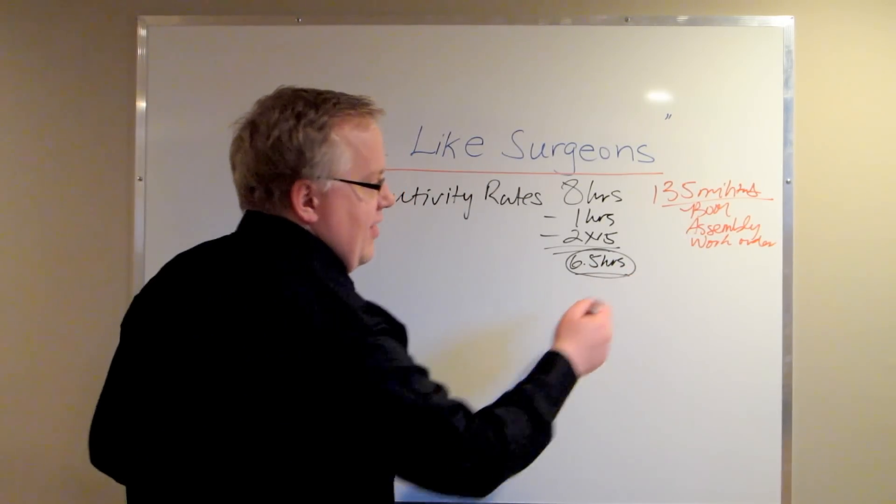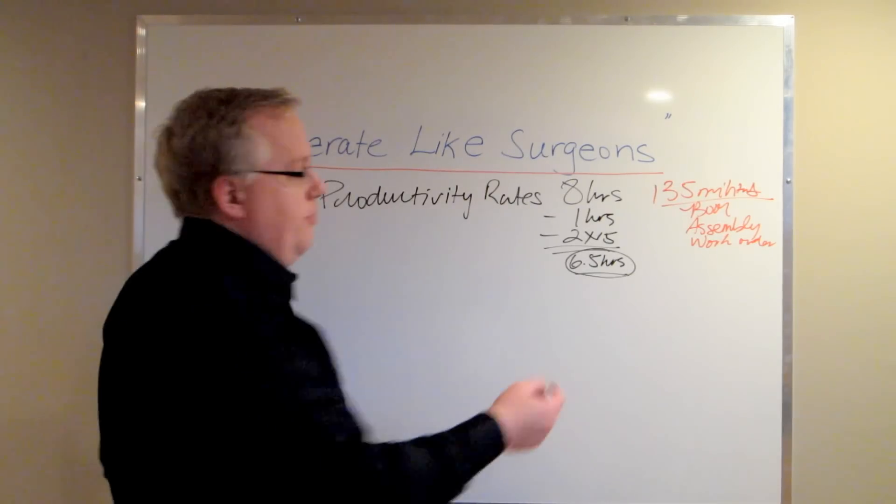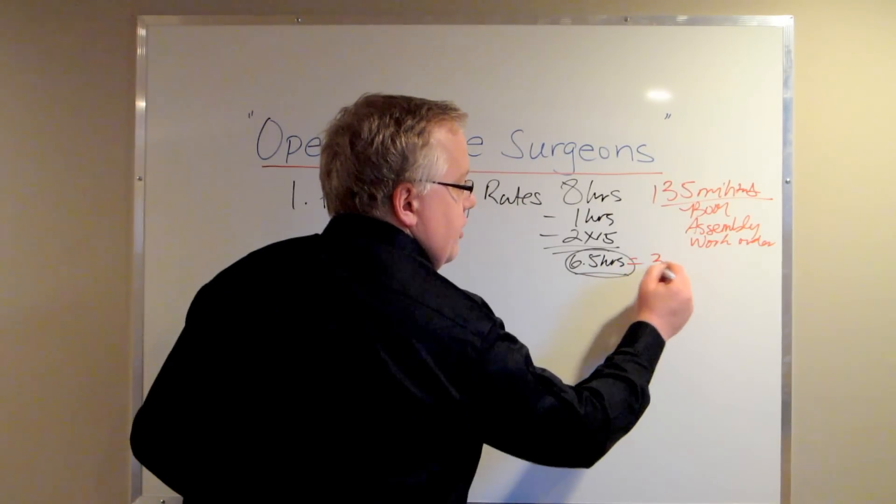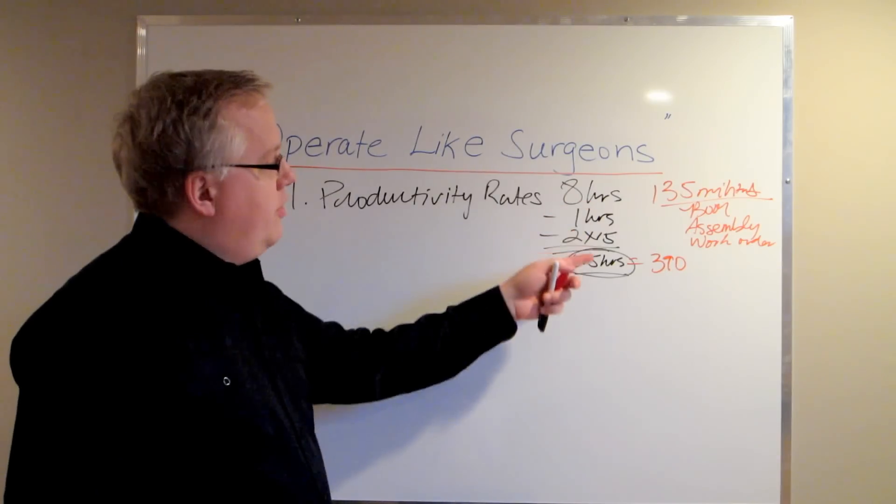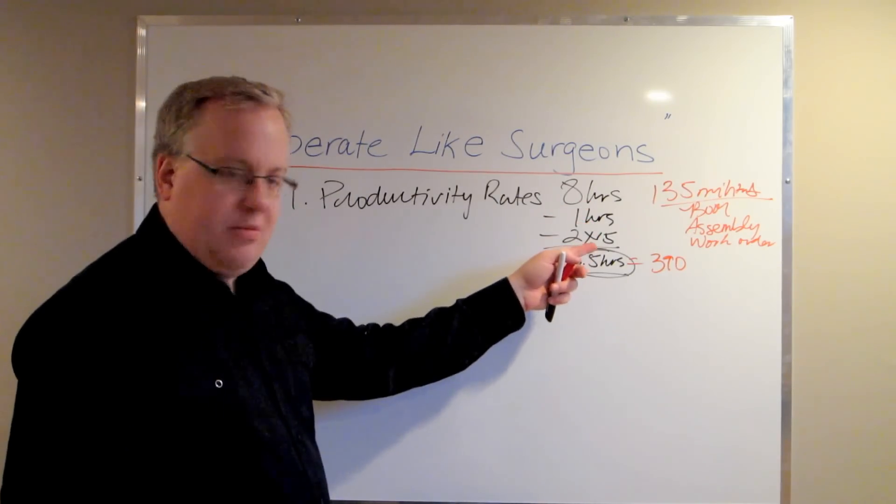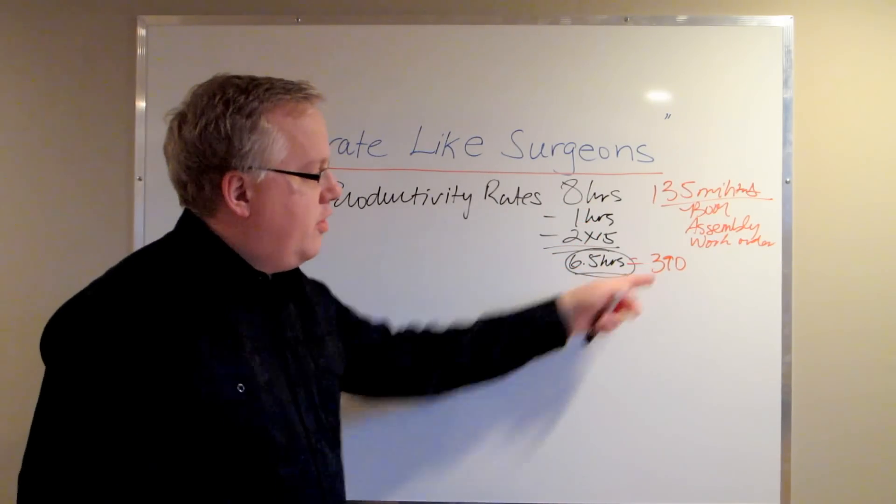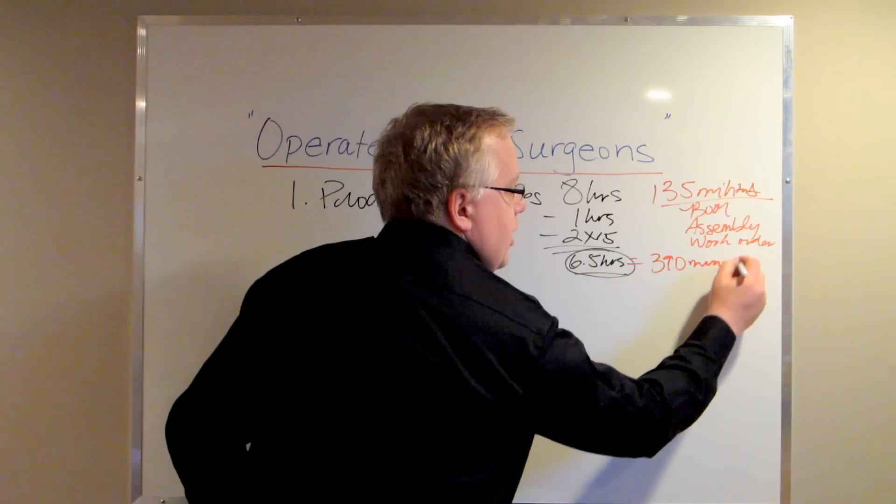If you convert this 6 1/2 hours into minutes, 6 1/2 hours is actually 390 minutes. So no one works 8 hours. You can take an hour off, take a 15-minute break, 6 1/2 hours, convert it into minutes as 390 minutes.